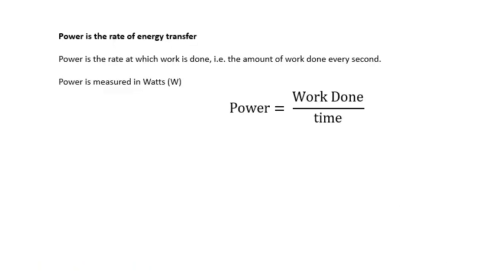Power. Power is the rate of energy transfer. The rate of—that means divided by time. It means how much of it happens every second, divided by time. Power is the rate at which work is done. In other words, it's the amount of work done every second. Power equals work done divided by time. We could measure it in joules per second, but it has its own units. Power is measured in watts.